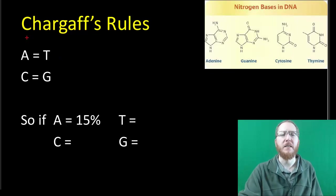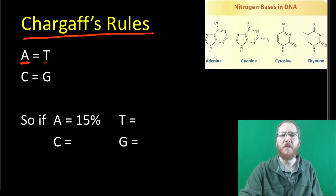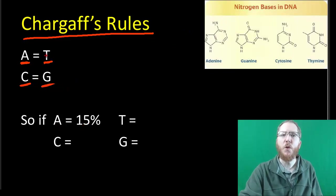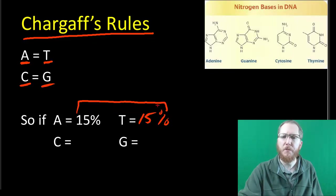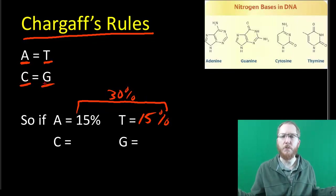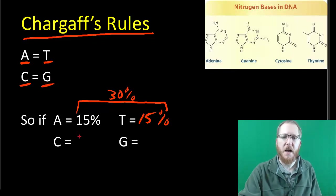Chargaff was one of the first guys that started looking at this, and he noticed that the amount of adenine in a particular species or organism equaled roughly the amount of thymine. And then the amount of cytosine equaled the amount of guanine. So for instance, if you have 15% adenine, you had an equal amount of thymine, which would be also 15%. And then 70 divided by 2 is going to be 35, so I'd have 35% cytosine and 35% guanine.